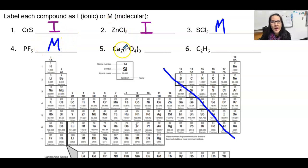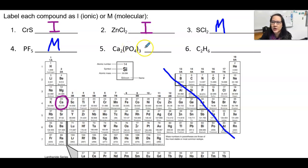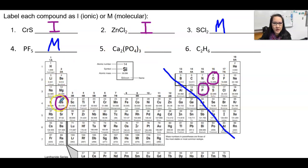Now we have calcium, which is here. And then we have something called phosphate, which is a combination of two or more non-metals that overall have a charge. We have phosphorus and oxygen, both of which are on the non-metal side of the staircase. But since we have a metal with non-metals, that makes this an ionic compound.